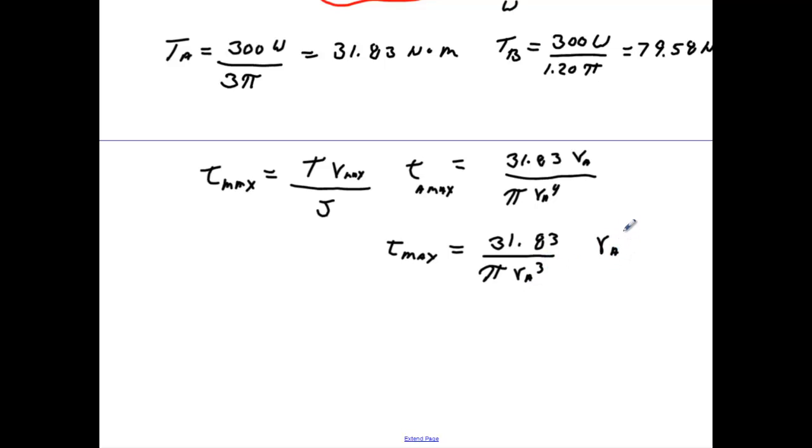And then R_A to the third power is going to equal to 31.83 over π times our shear max. So R_A is going to equal to 31.83 over π, and our shear max was 85 times 10 to the sixth. We'll take all that to the one-third power, and when we do we'll get R_A is 0.0062, or double that and convert back to millimeters we'll get 12.4 millimeter diameter shaft.